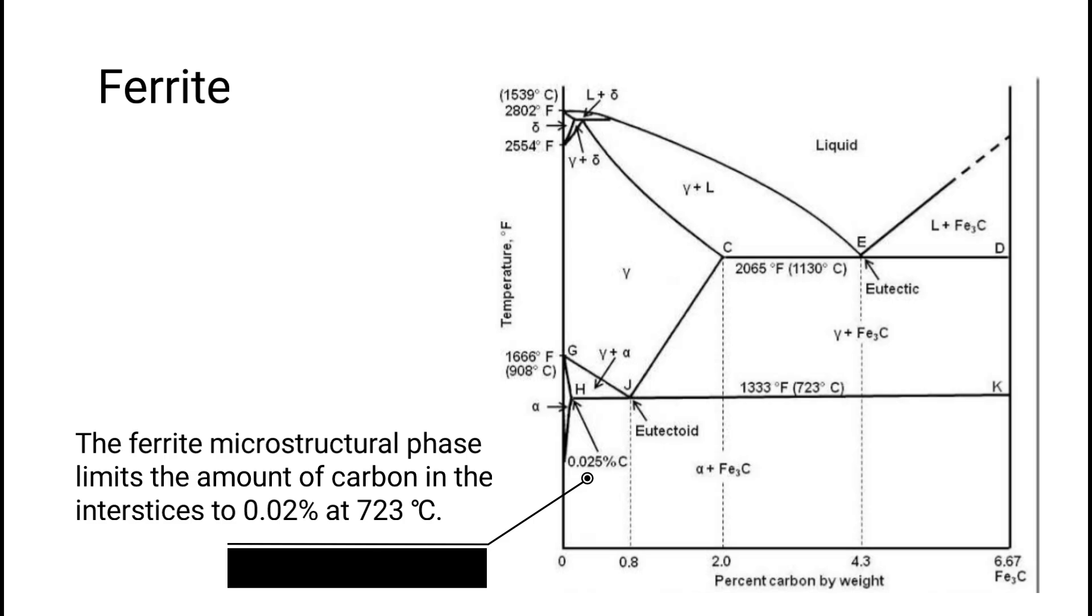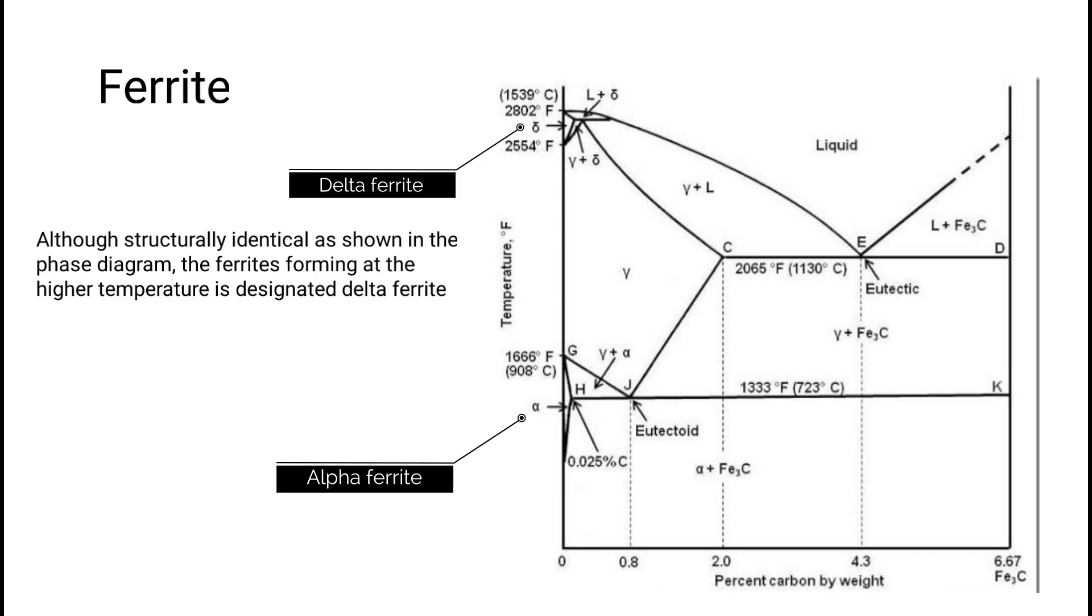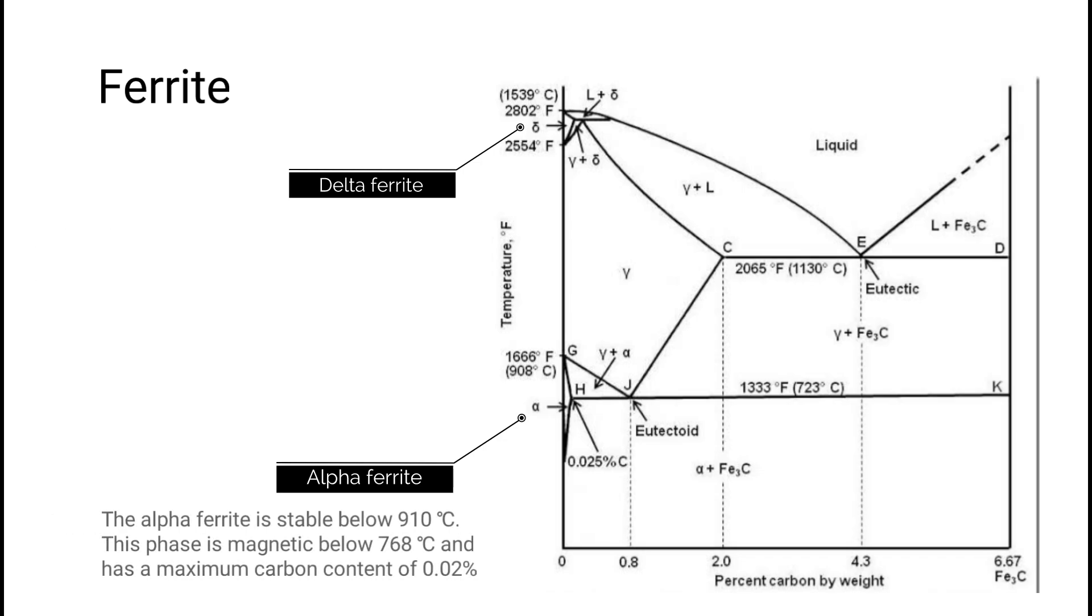The ferrite microstructural phase limits the amount of carbon in the interstices to 0.02 percent at 723 degrees Celsius, while at room temperature it drops to 0.006 percent. Although structurally identical, as shown in the phase diagram, the ferrite forming at higher temperature is designated delta ferrite, while the ferrite forming at lower temperature is called alpha ferrite. Alpha ferrite is stable below 910 degrees Celsius.